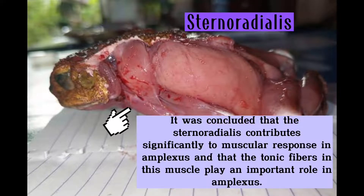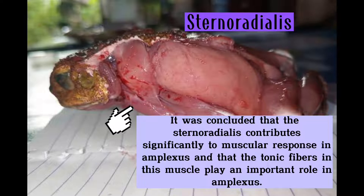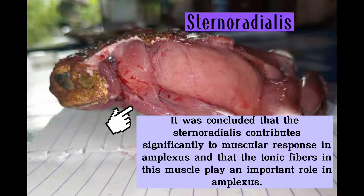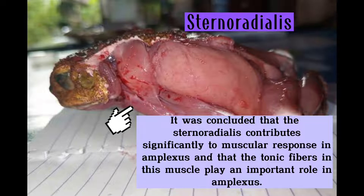It was concluded that the sternoradialis contributes significantly to muscular response in amplexus and that the tonic fibers in this muscle play an important role in amplexus.